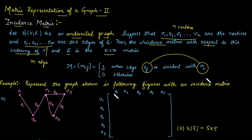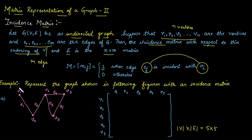After that, write the ordering of vertices and edges — it is very important when constructing the incidence matrix for any graph. In this case, we take the ordering of edges column-wise as e1, e2, e3, e4, e5 and the ordering of the vertices as v1, v2, v3, v4, v5. Now take the first edge e1. Edge e1 is associated with vertices v1 and v4, so the corresponding entries in rows 1 and 4 are 1, and the rest are 0.